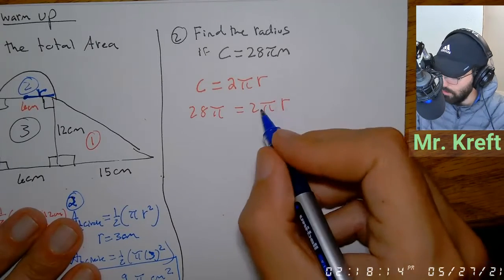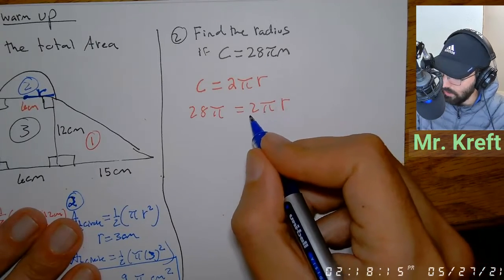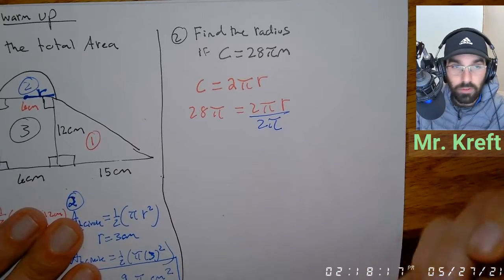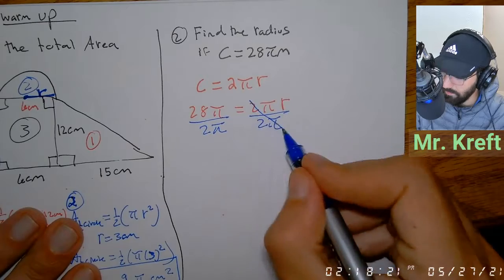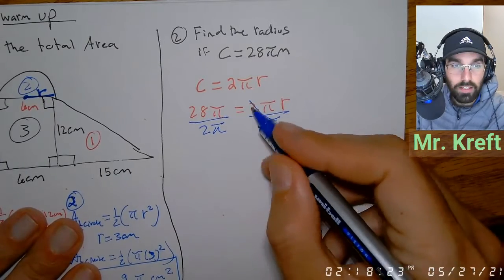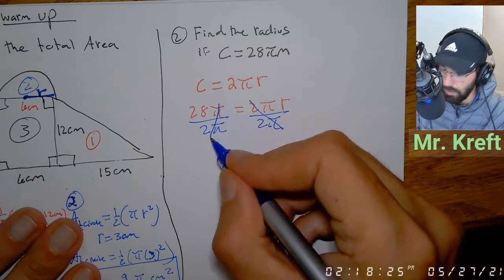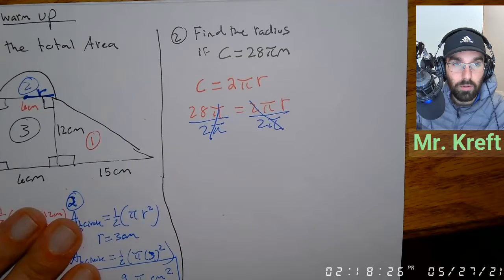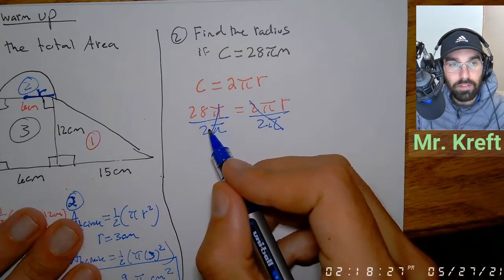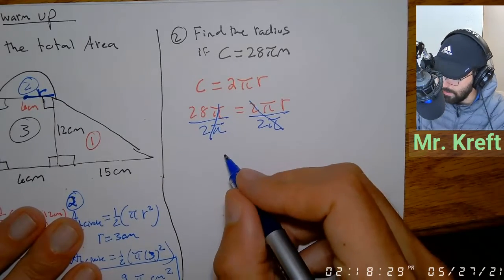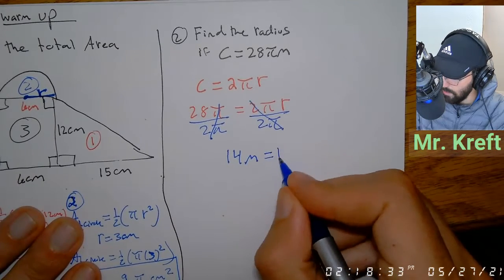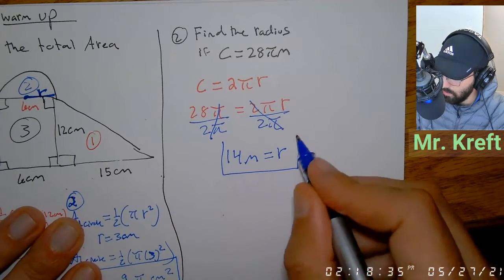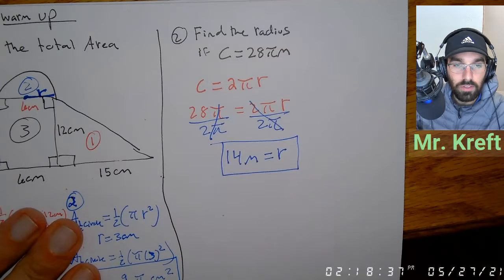We undo multiplication with division, so divide both sides by 2 pi. The pi's cancel, the 2's cancel, and we get r equals 28 divided by 2, which is 14 meters. So our radius equals 14 meters.